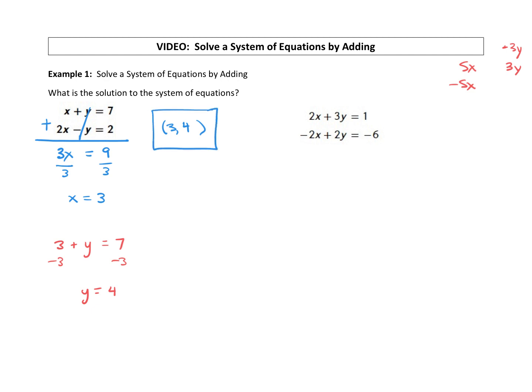Okay, so that one was pretty easy, pretty quick because we had our opposite coefficients right away. So always look for it because if you have those, then you are ready to add the equations together to eliminate one of your variables.